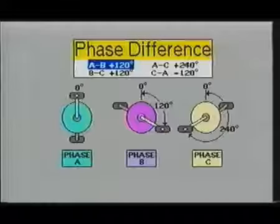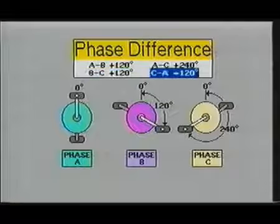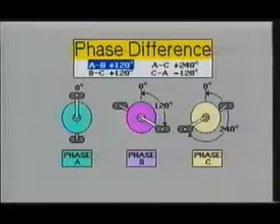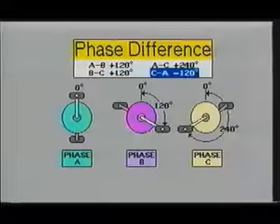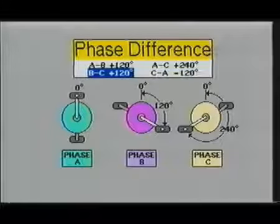To illustrate the effect of three phase electricity, we will use three sets of bicycle pedals. Each pedal is set 120 degrees from the other two pedals. As you can see, the front pedal of phase A starts at zero degrees, the front pedal of phase B starts at 120 degrees, and the front pedal of phase C starts at 240 degrees.